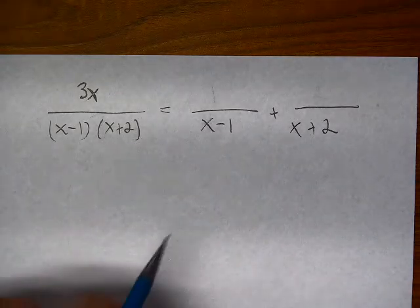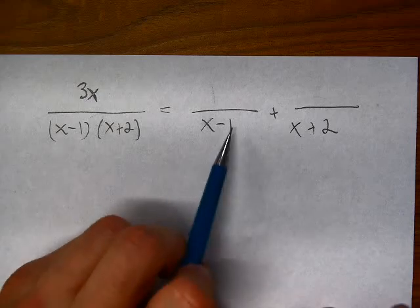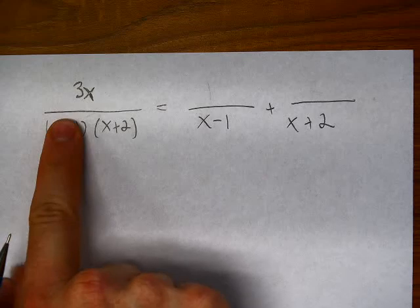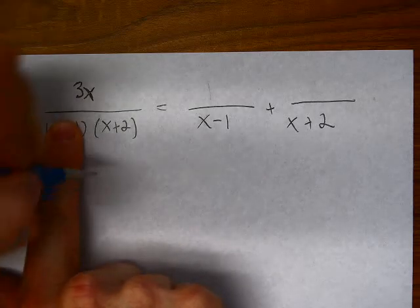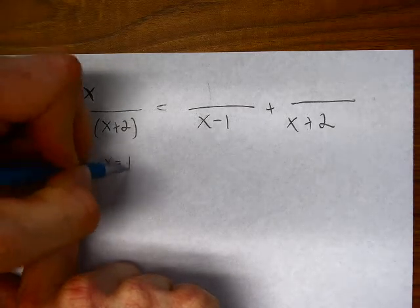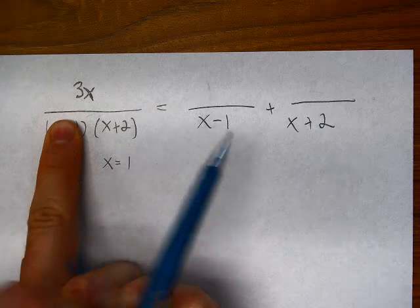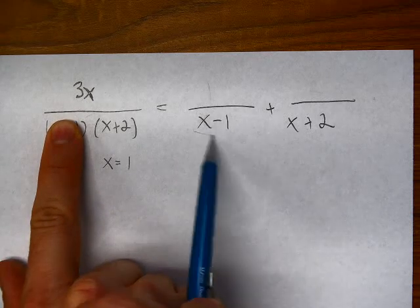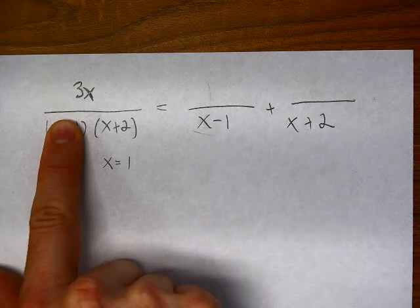All right, so if I want to know the numerator that goes with the x minus 1 term, I'm going to cover over the x minus 1 and I'm going to let x equal 1. I'm going to let x equal the value that would make this denominator equal to 0.